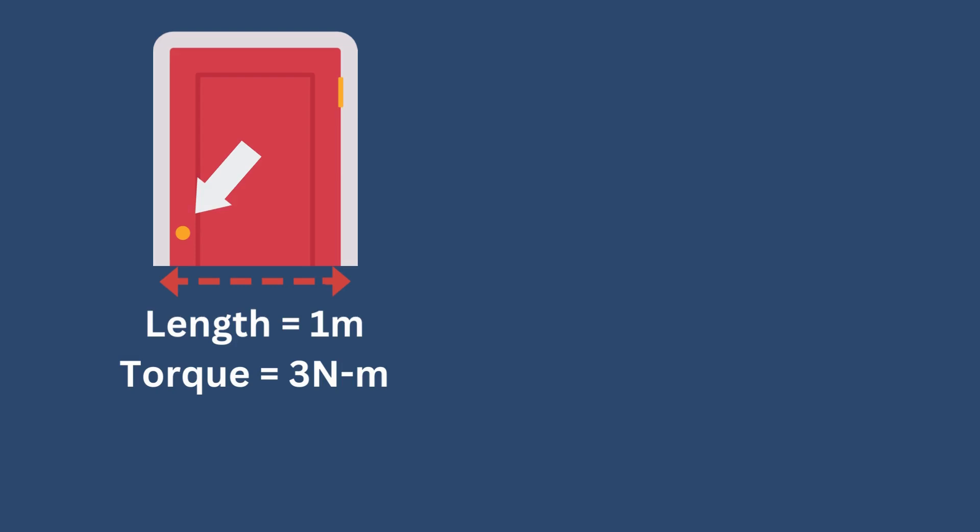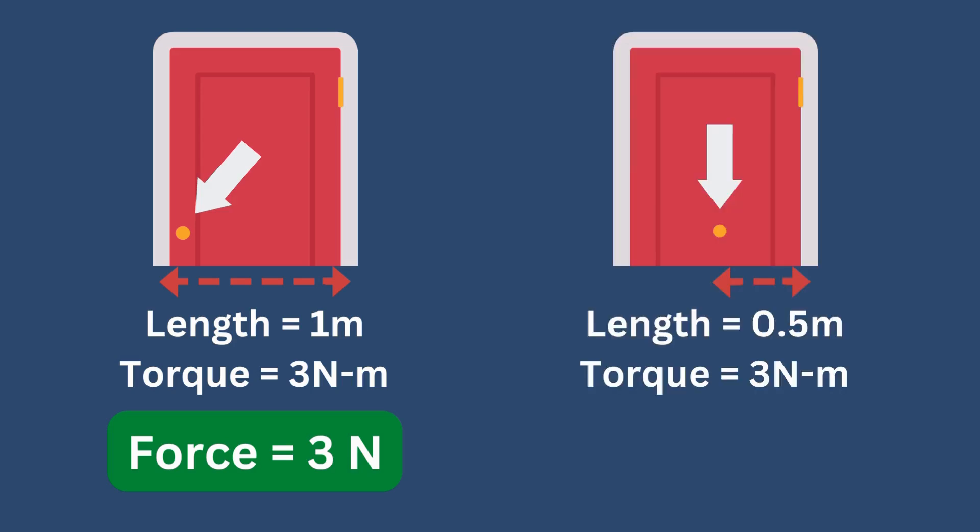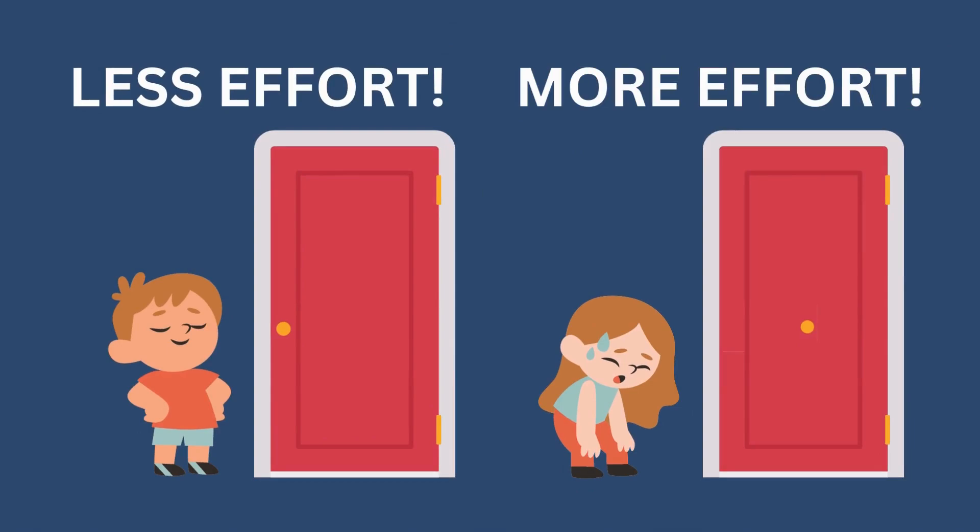The same applies to the doorknob. If the doorknob is located on the edge of the door, it will only take 3 newtons of force to open it. Meanwhile, if the doorknob is located in the middle, the required amount of force to open it will be doubled. Thus, it will require more effort to open the same door if the doorknob is located in the middle.